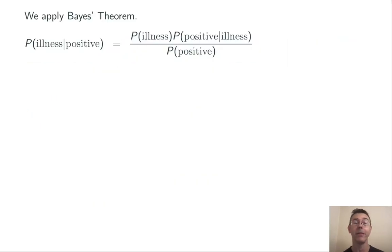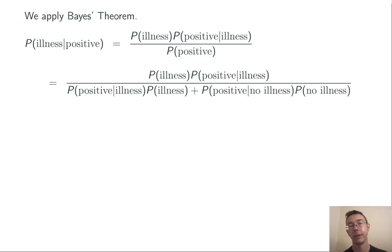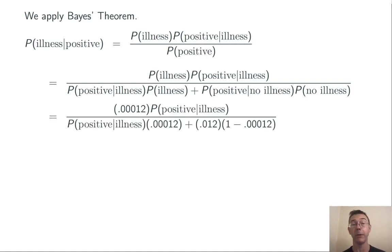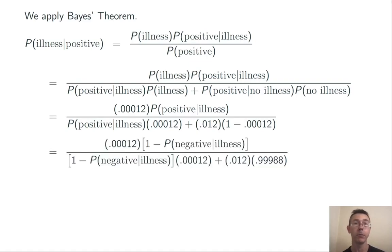We're going to apply Bayes' theorem. The probability of having the illness given that you've tested positive is equal to the probability of having the illness times the probability of testing positive given that you have the illness, divided by the probability of testing positive. We rewrite the denominator using the law of total probability: it's the probability of testing positive given that you have the illness times the probability of having the illness, plus the probability of testing positive given that you do not have the illness times the probability that you do not have the illness. The probability of having the illness is 0.00012. The probability of testing positive given that you have the illness is a complementary event, so it equals 1 minus the false negative rate: 1 minus 0.09.